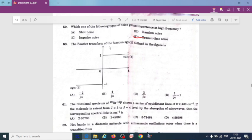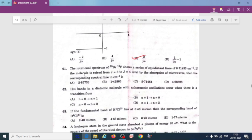Fourier transform of the function sine as a function of t defined in the figure is 2 divided by j omega. The rotational spectrum of bromine 79 and fluorine 19, bromium fluoride, shows a series of equidistant lines 0.71 per centimeter. If the molecule is raised from j equal to 3 to j equal to 4 level by the absorption of microwaves, then the corresponding spectral line in per centimeter is 5.71.